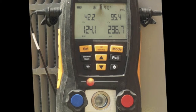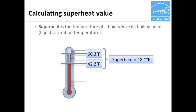Now Rob has cycled through to the second screen. The same measured pressures are shown on the bottom, but now the temperatures shown on top have changed. Instead of the measured temperatures, they now show the saturation temperatures corresponding to the measured pressures, which the manifold automatically calculates using a pressure-temperature lookup table. Now Rob has cycled through to the third screen. Again, the same measured pressures are shown on the bottom, but now the temperatures on top are the difference between the measured temperatures from the first screen and the saturation temperatures from the second screen — that is to say, the superheat and subcooling values.